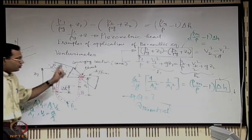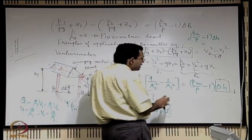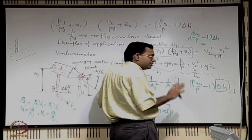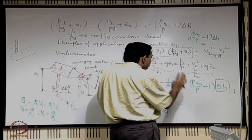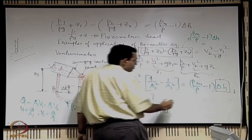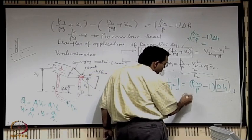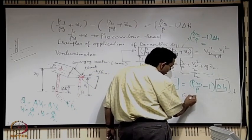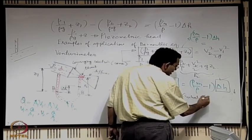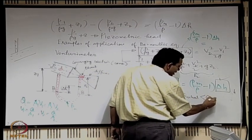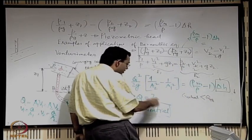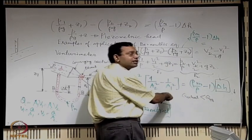If you consider this effect alone, Q actual should be less than Q theoretical, which you calculate using this formula, because you are inserting an overestimated delta H.